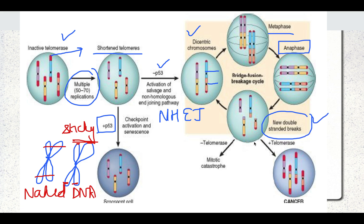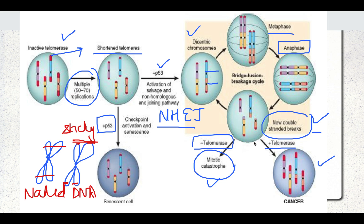Due to these breaks, if telomerase is not present in such a cell, the cell will die — it will go into mitotic catastrophe and cell death will take place. But if telomerase is present in such cells, there is inactivation of certain oncogenes and tumor suppressor genes because of such breaks. Telomerase then expresses itself and leads to cancerous production. This whole pathway is known as the non-homologous end-joining pathway, or bridge-fusion-breakage cycle, because there is repeated bridging, fusion, and breakage of the chromosome.